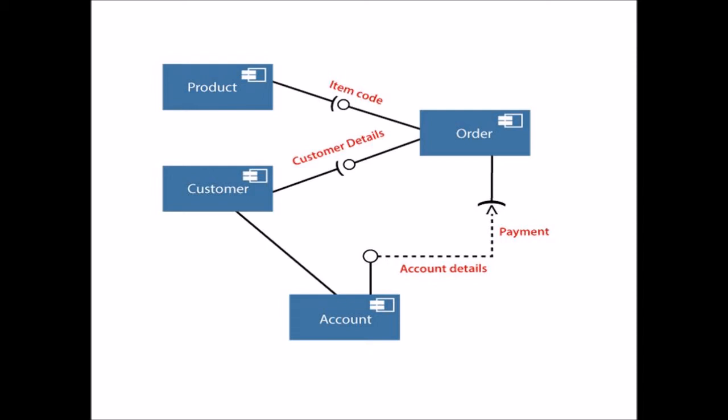Following are some points that need to be kept in mind after the artifacts are identified: use a meaningful name to ascertain the component for which the diagram is about to be drawn; before producing the required tool, a mental layout is to be made; and thirdly, to clarify the important points, notes can be incorporated.